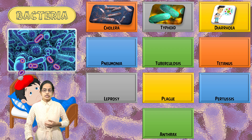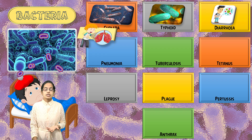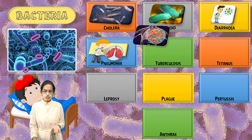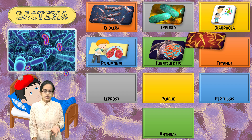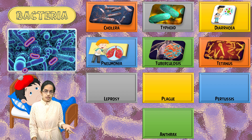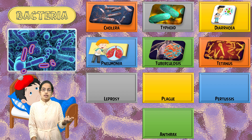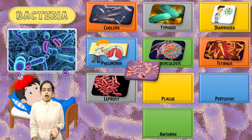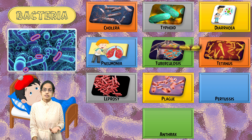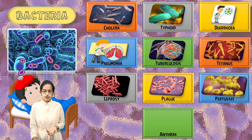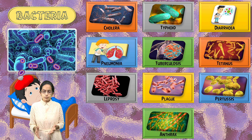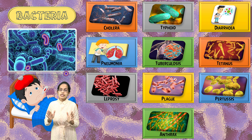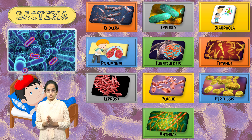Diseases like cholera and typhoid are spread through houseflies. Cholera is also spread through cockroaches. Tuberculosis is an air-borne disease. Tetanus spreads through contaminated fecal matter and rust. Plague is spread through rats, which is vector-borne. Other bacterial diseases include pertussis, which is whooping cough, and anthrax. These are some of the commonly caused diseases due to bacteria.